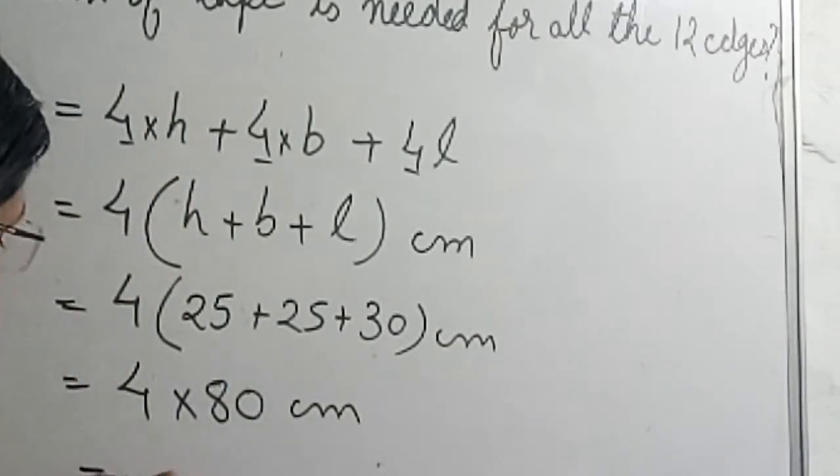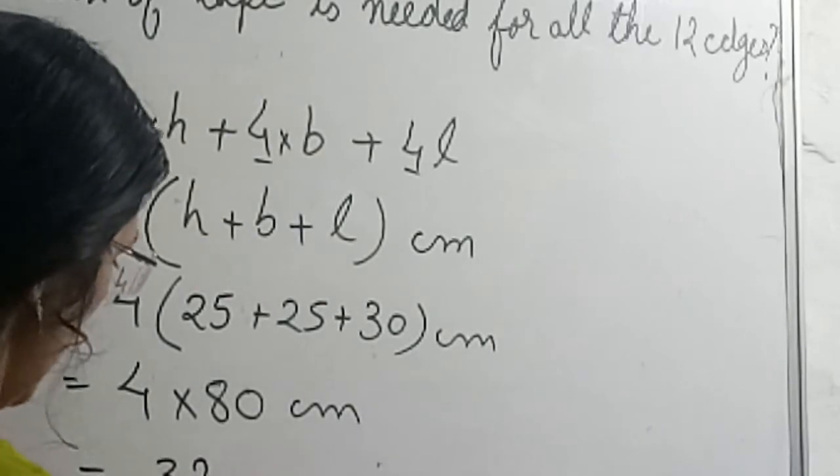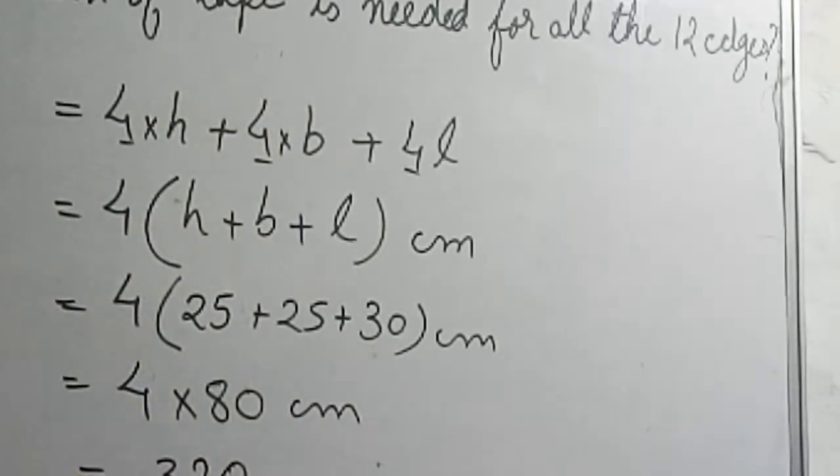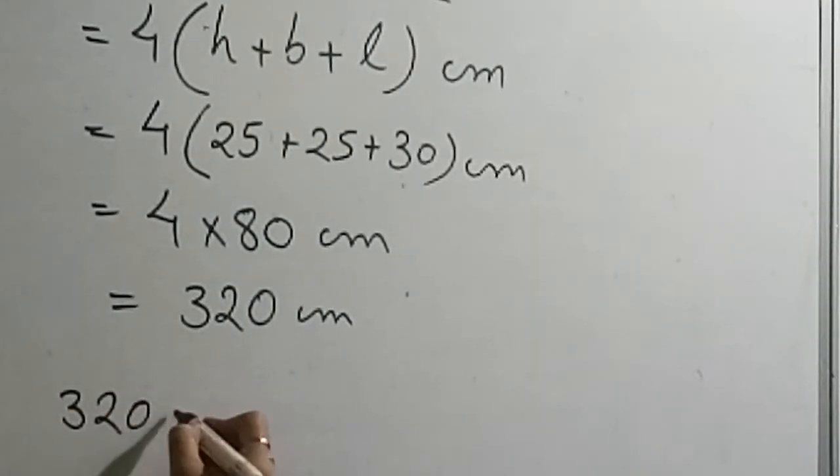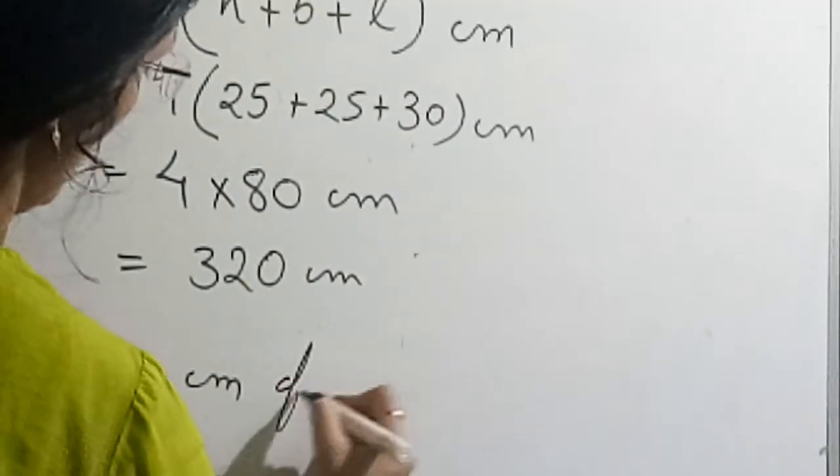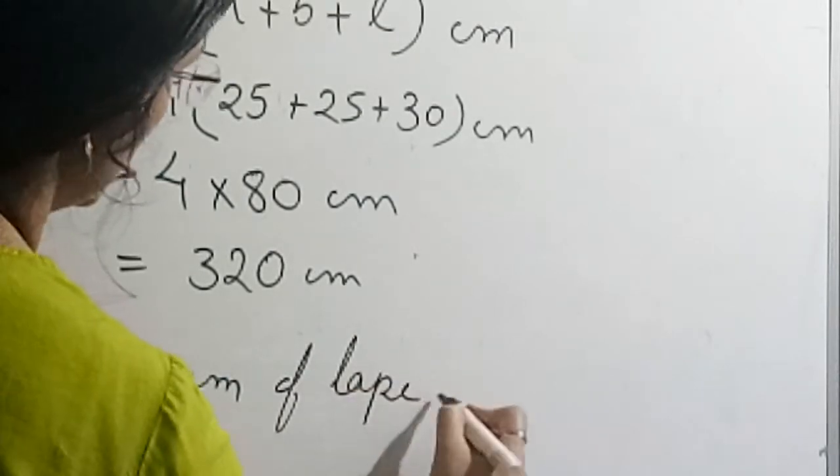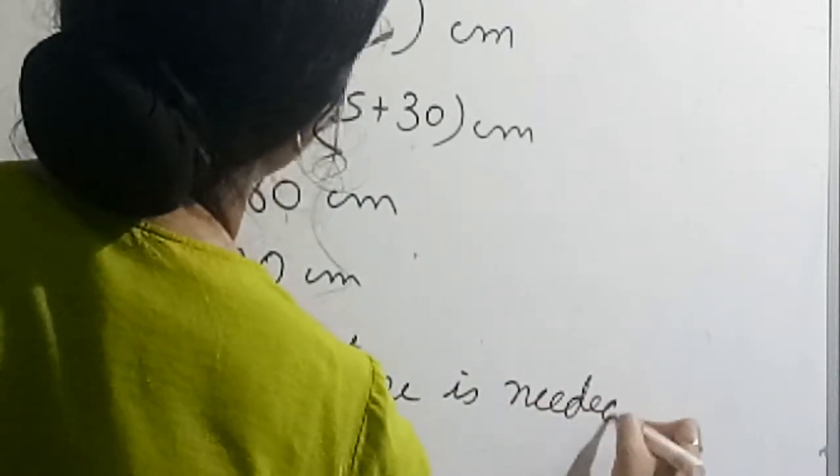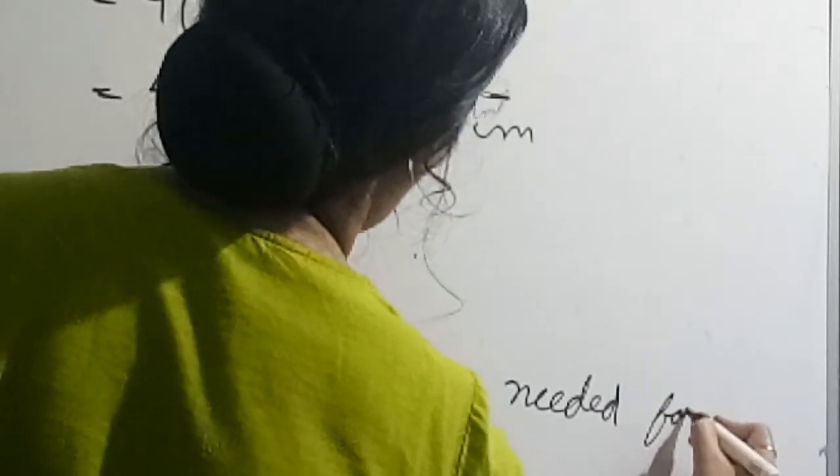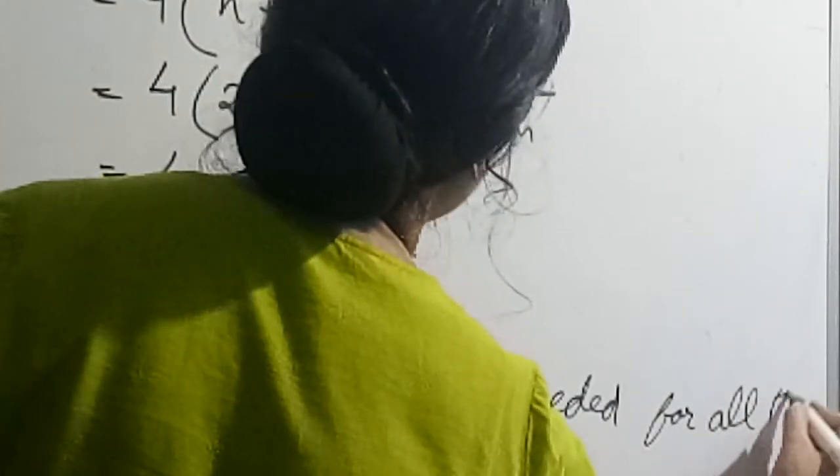We will multiply by 4: 4 times 80 is 320 centimeter. Thus 320 centimeter of tape is needed for all the edges.